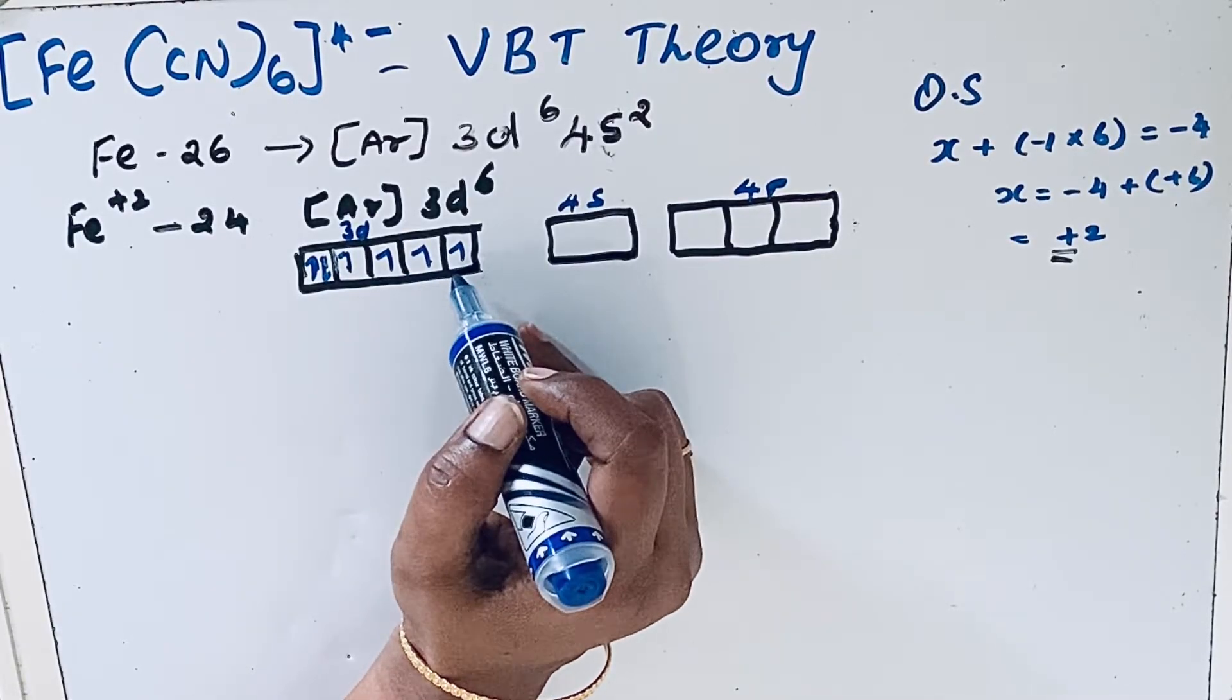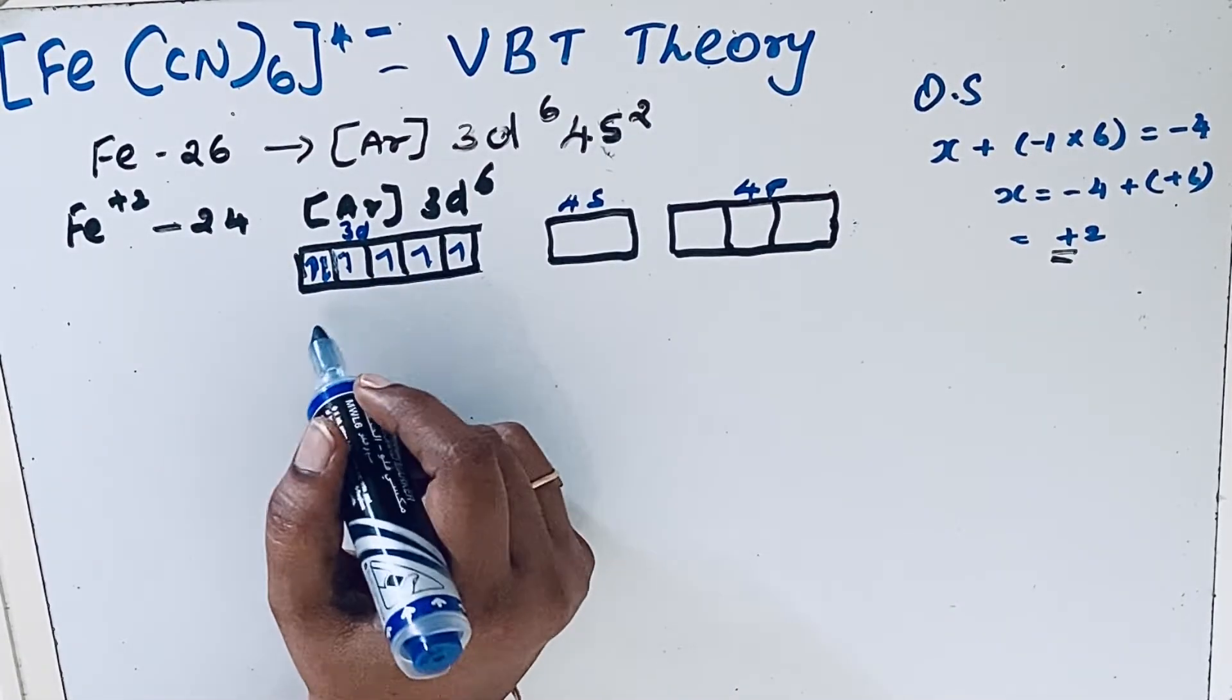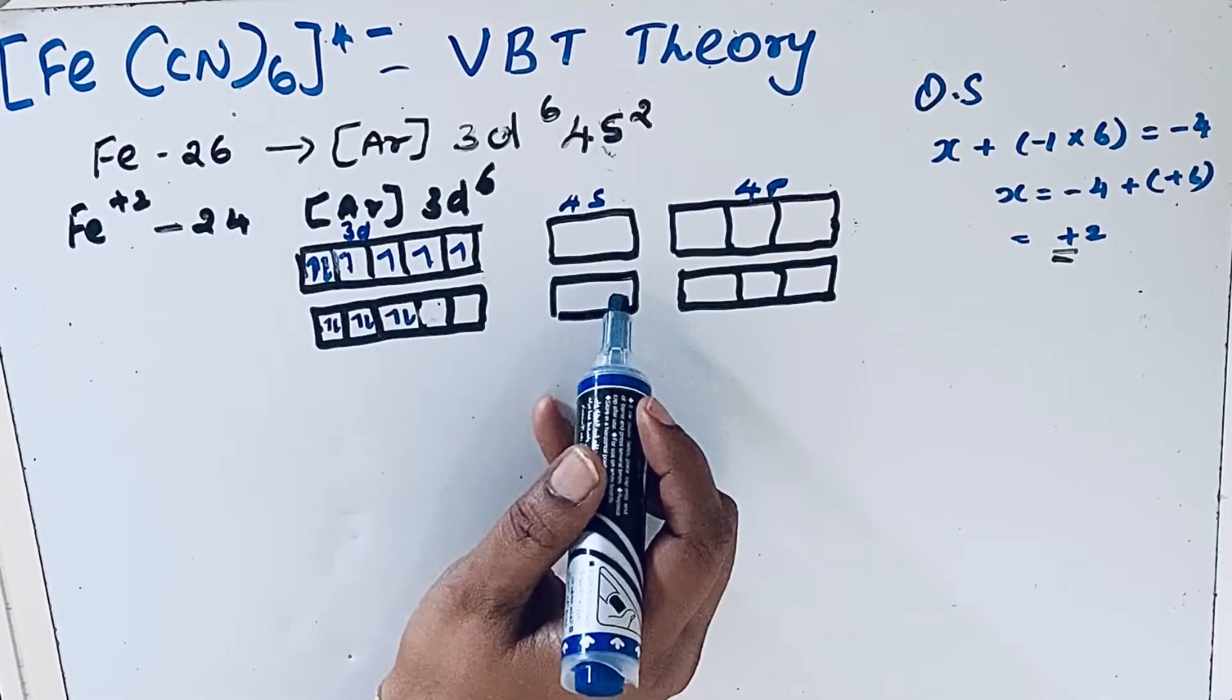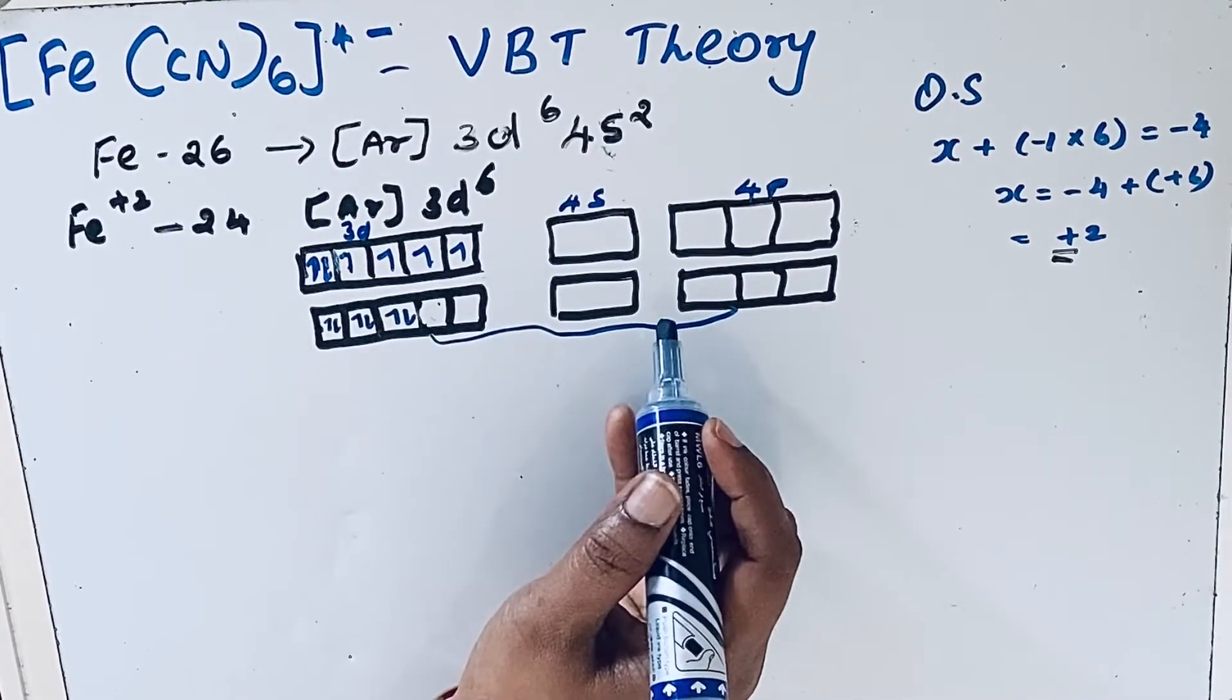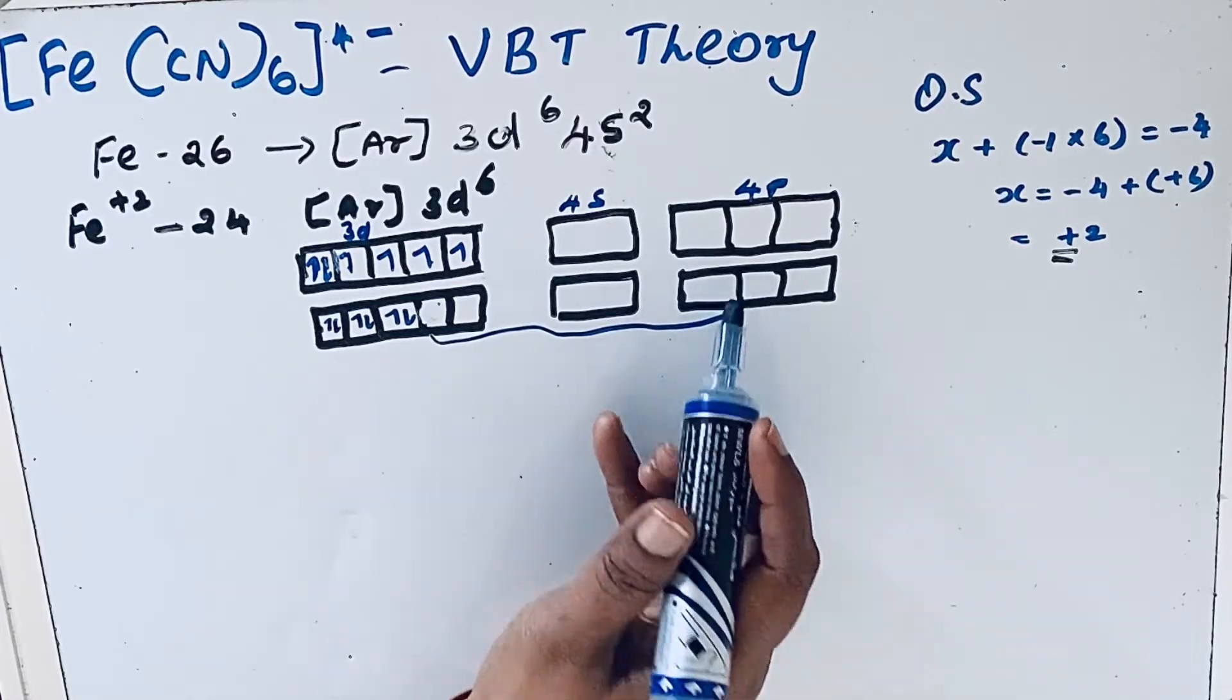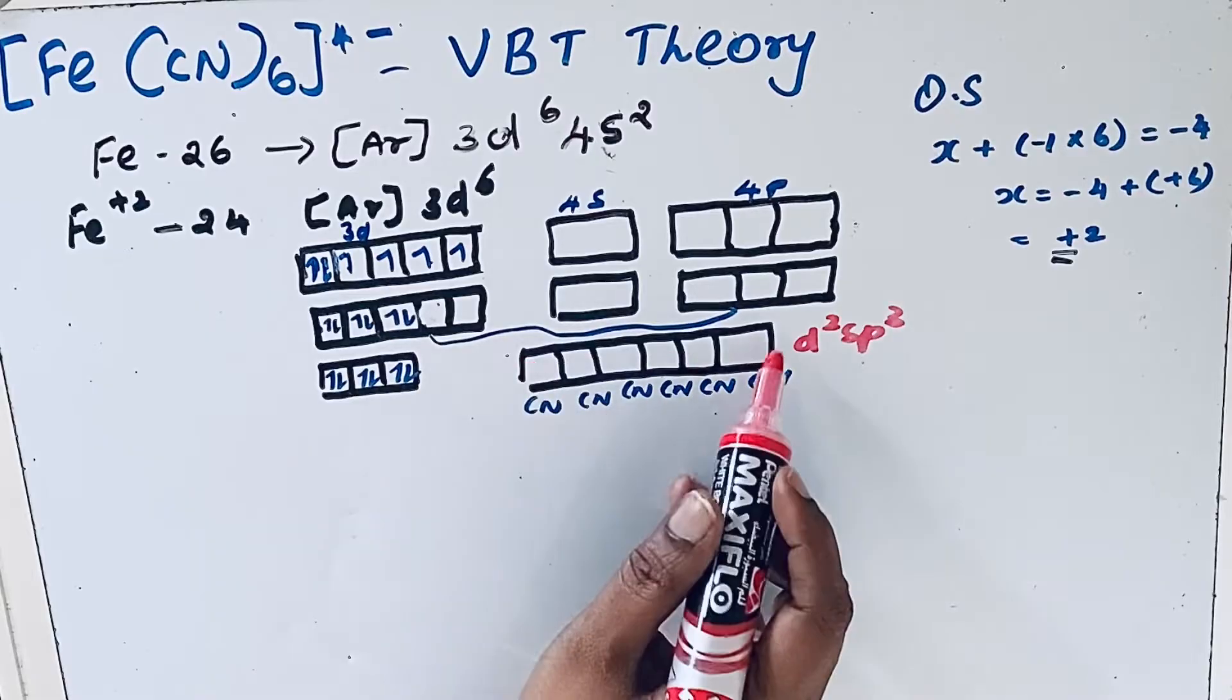d orbitals available for hybridization. These two 3d orbitals, one 4s orbital, and three 4p orbitals all intermix to form d2sp3 hybrid orbitals.